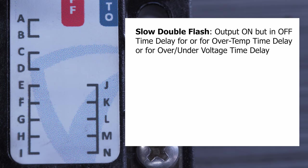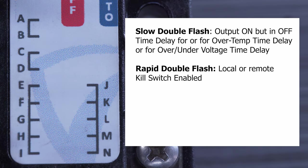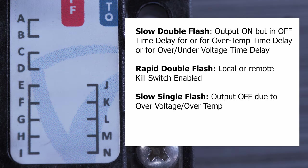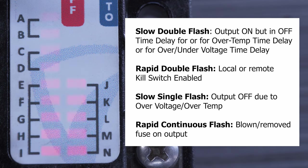Slow double flash means the output is on but the PDM is in time delay to turning off from either a normal shutdown situation or from over temp protection or from under or over voltage protection. A rapid double flash indicates that the yellow kill switch is in the on position or the remote kill switch wired to terminal number 8 has positive voltage applied. Slow single flash means the corresponding output has been turned off because the over voltage or over temp has exceeded the operating threshold. And finally, the rapid continuous flash tells you if any circuit has a blown fuse.